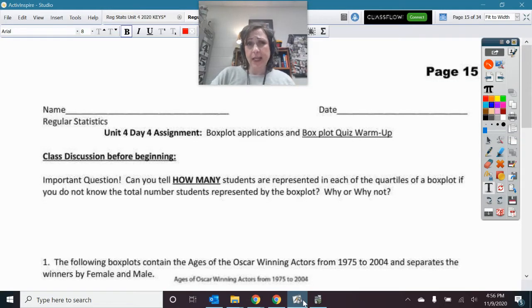Alright, so there is one last thing that we need to fully understand before we finish up our boxplots, and that has to do with this very important question. Can you tell how many students are represented in each quartile of a boxplot if you do not know the total number of students that the data came from? Why or why not?